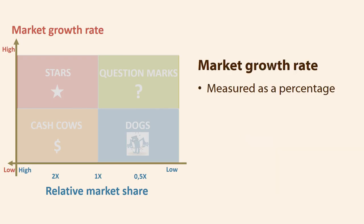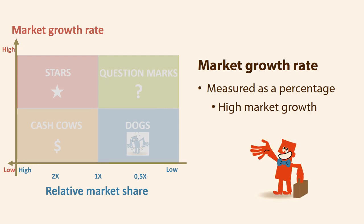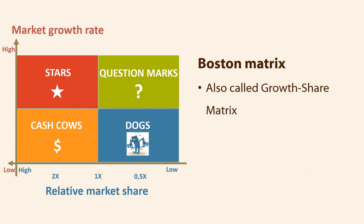Market growth on the Y-axis refers to the market the company is in, and growth is measured as a percentage with low at the bottom and rising to high in the direction of the vertical arrow. High market growth means that many consumers are demanding the product, making it an attractive market for the company to be in. The growth rate of an industry and the market share of a respective business relative to the largest competitor are taken as the basis for classifications. For that reason, the BCG matrix is also called the growth share matrix.